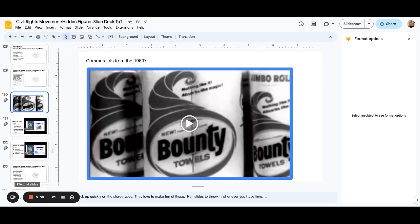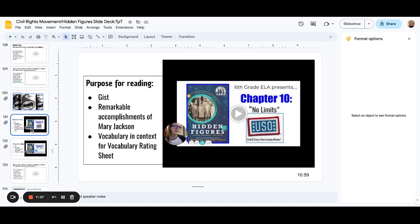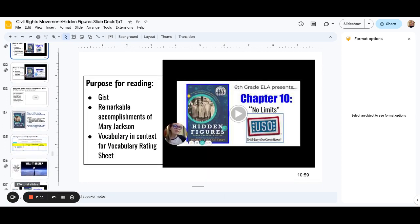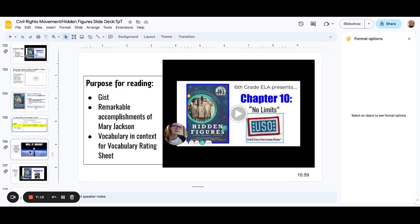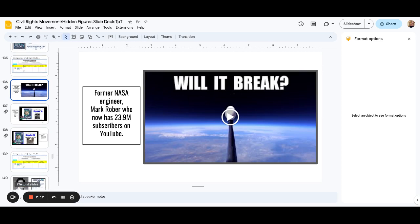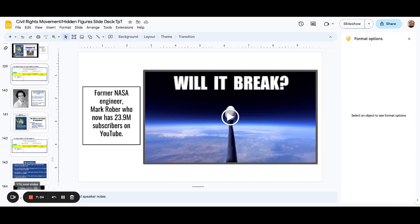This is a video of 1960s commercials. The kids actually picked up on the stereotypes very quickly. They love making fun of these because they are terrible. More chapter reading. More vocabulary and context. Mark Rober, if you know who that is, he's a famous YouTuber. I included some space stuff from him. He was a former NASA engineer. More vocabulary and context.